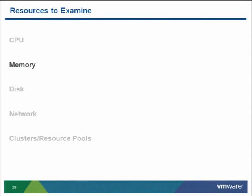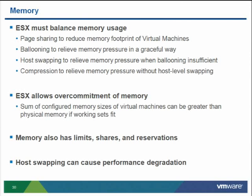Now let's talk about memory. ESX balances memory usage between multiple virtual machines and allows overcommitment. If you have 10 VMs each configured at 1 GB, you might think you need 10 GB, but what matters is the working set. If each VM has a 100 MB working set, you'd only need about 1 GB total. ESX enables this through page sharing — when pages within or across VMs are identical, it stores only one copy in memory. When ESX determines one VM needs more memory and must reclaim from others, it uses ballooning, host-level swapping, and compression.